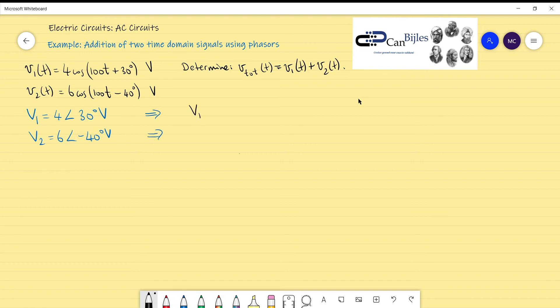What you do is V1 is equal to the amplitude 4—you take it out—and you do cosine of the angle 30 degrees plus j sine of the angle 30 degrees, and you calculate it out.